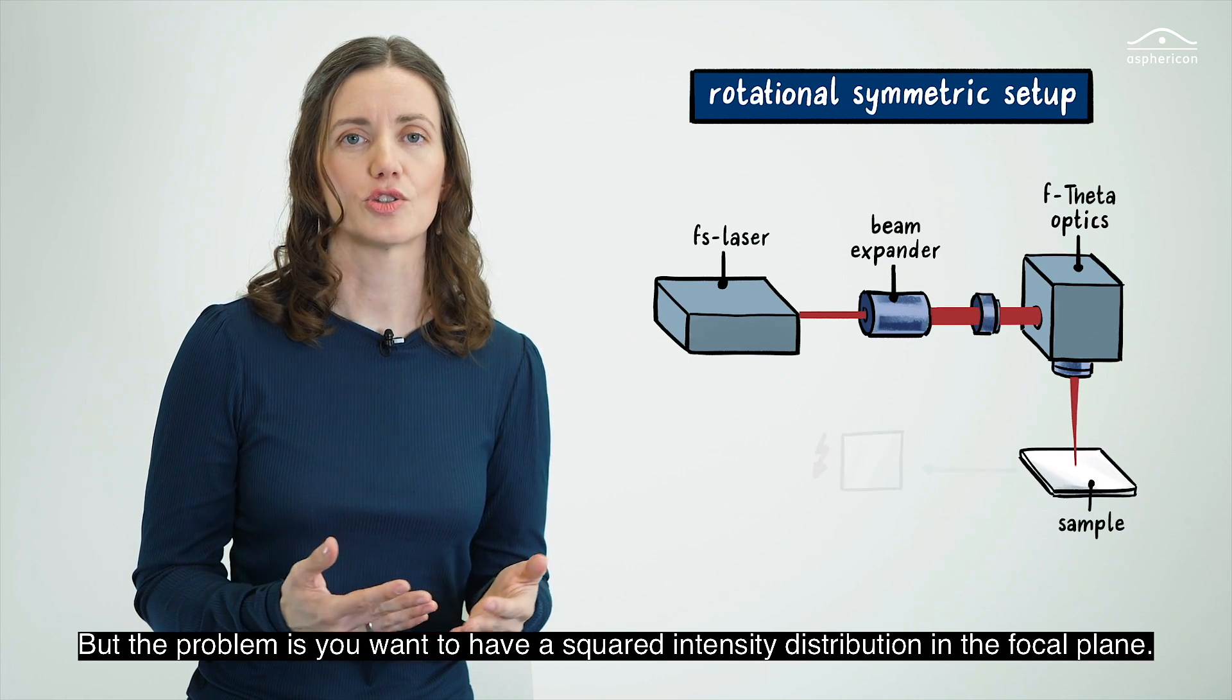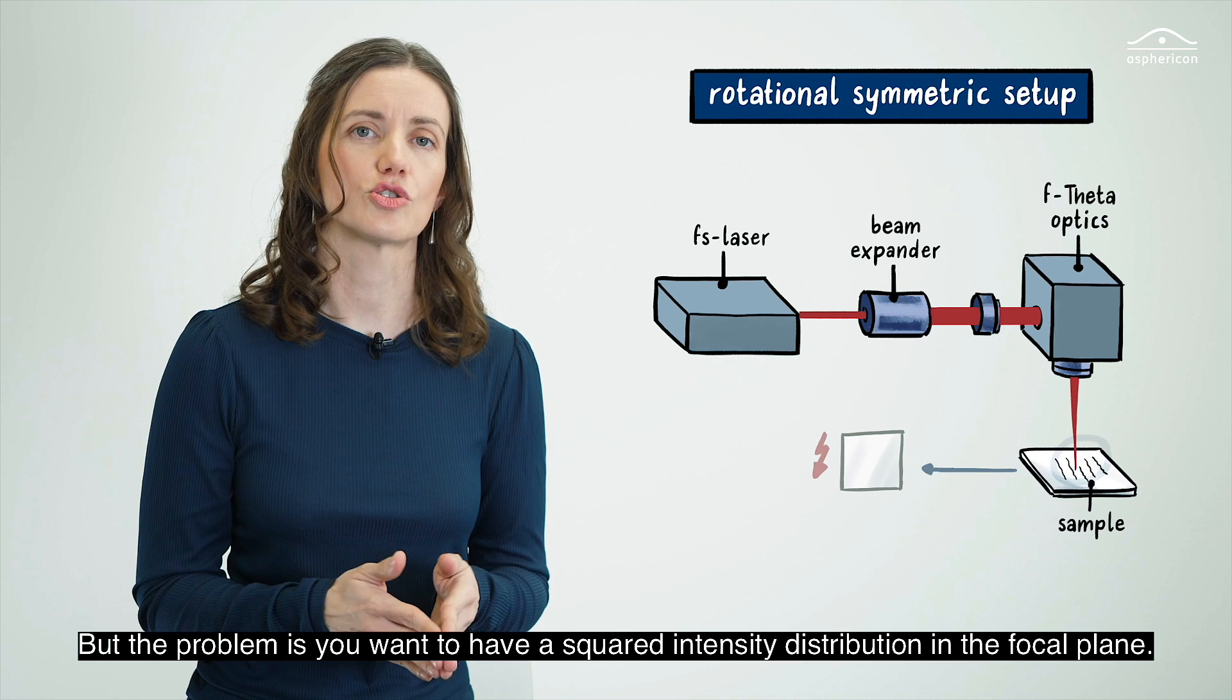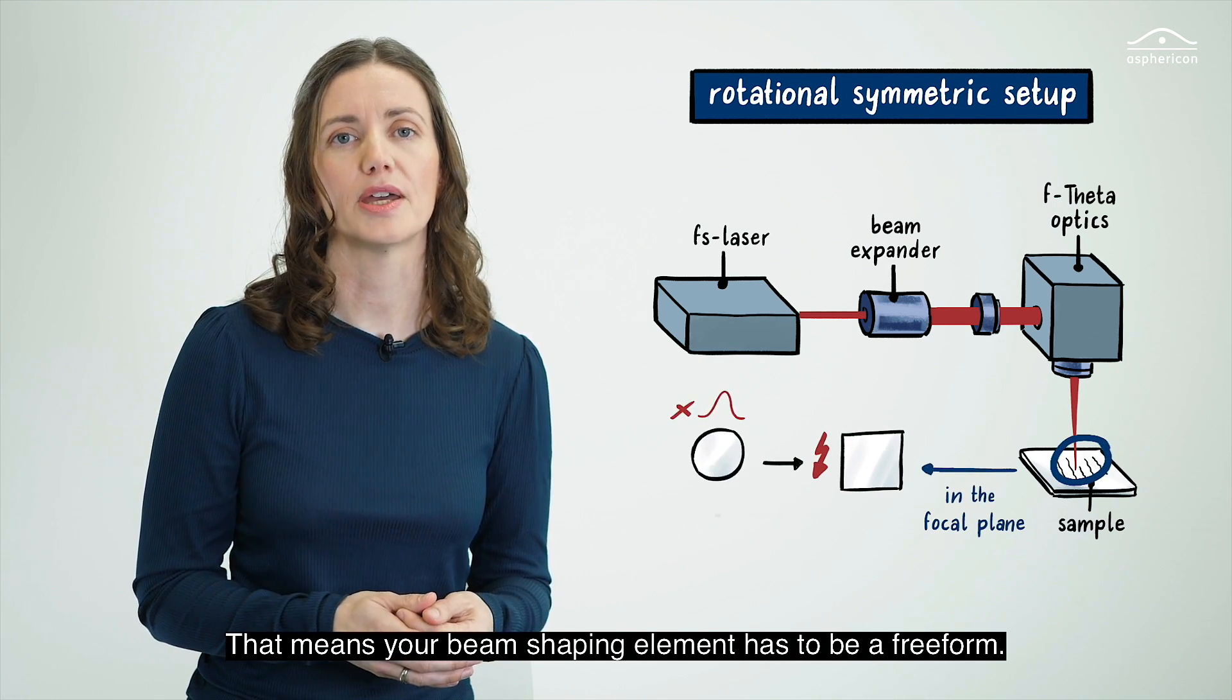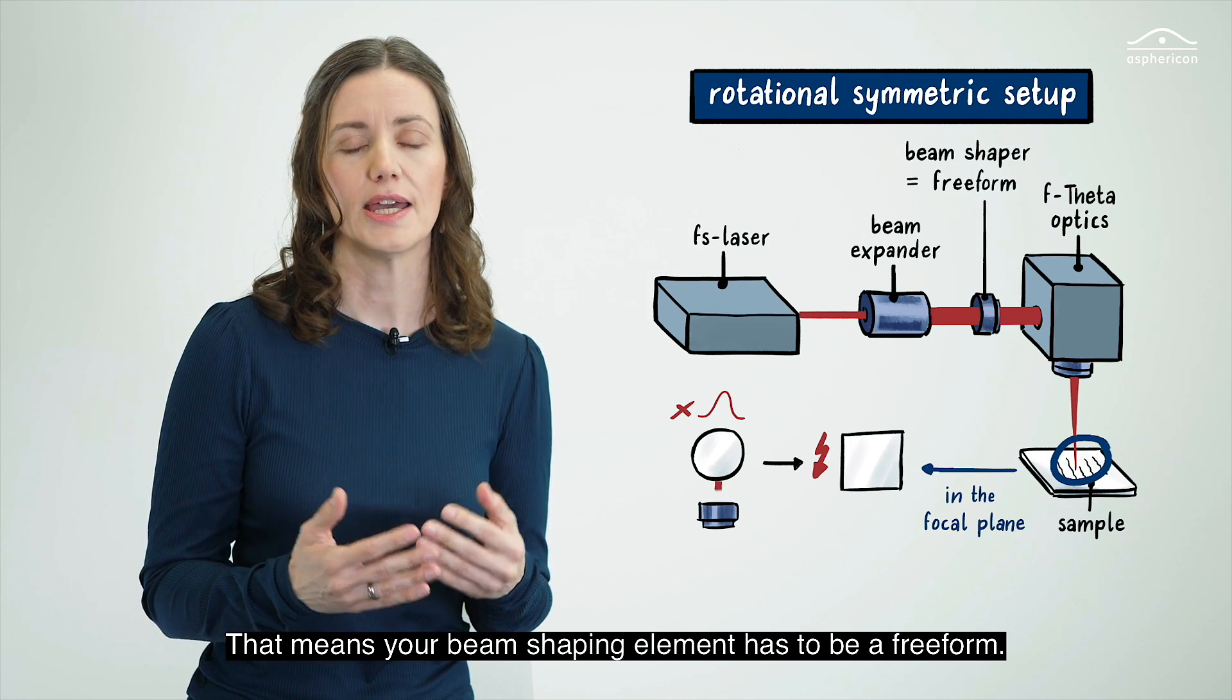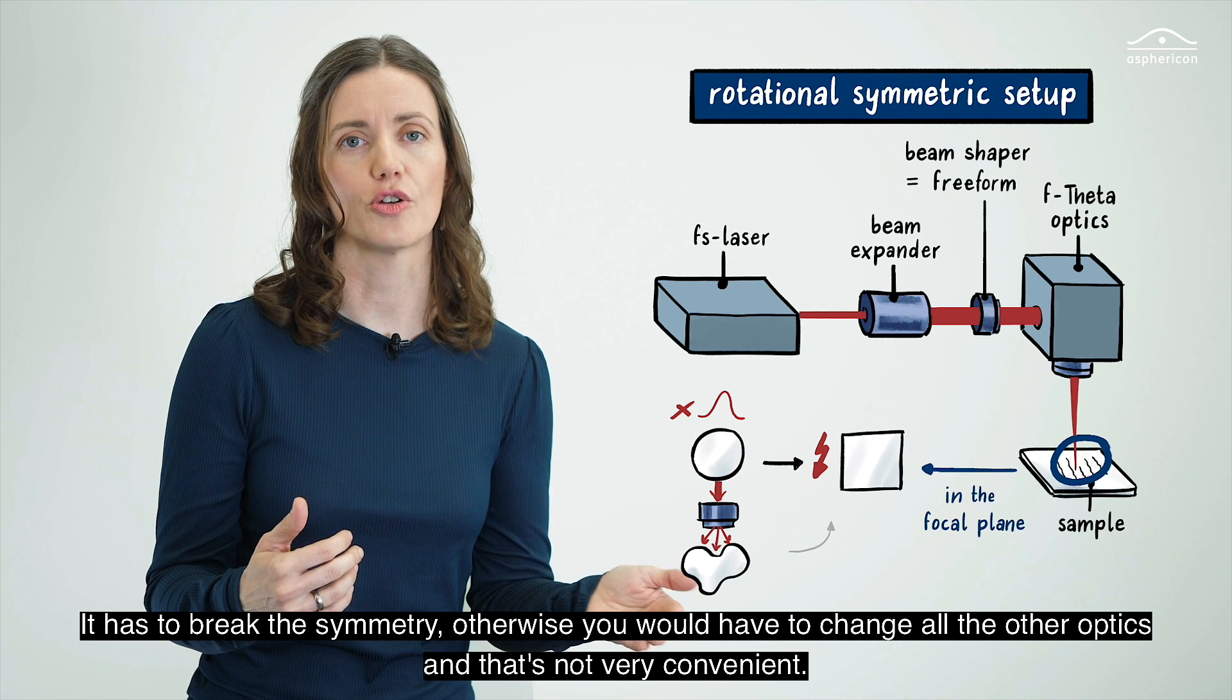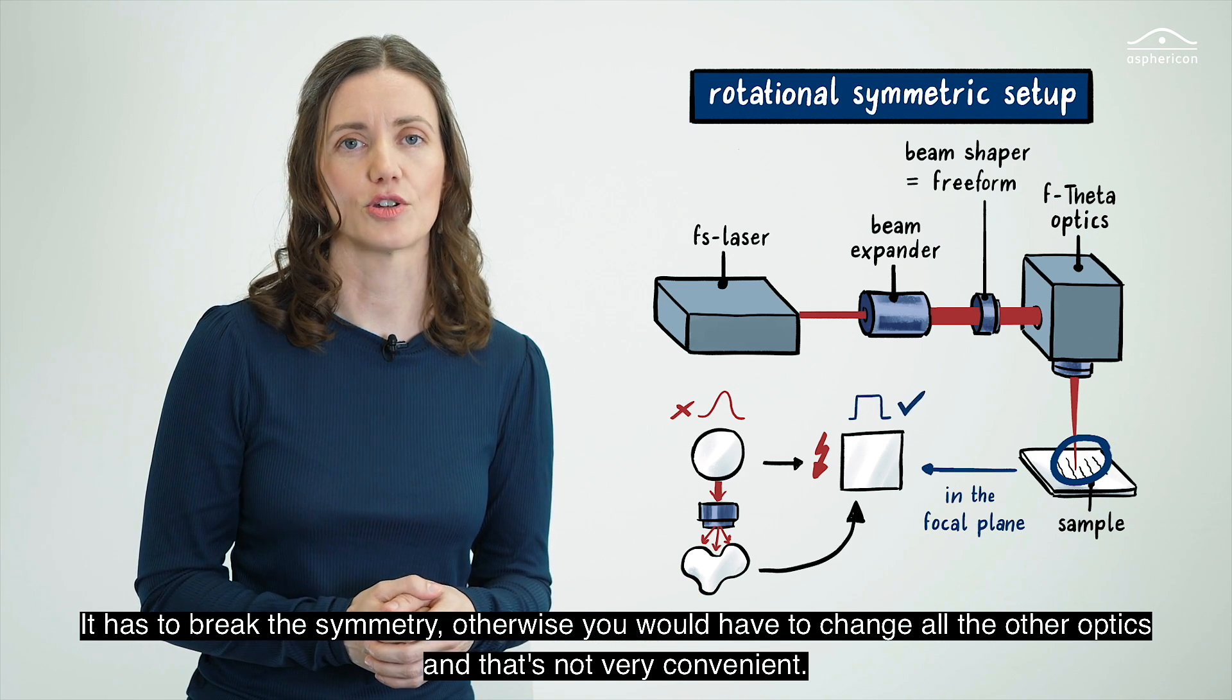But the problem is you want to have a squared intensity distribution in the focal plane and that means your beam shaping element has to be a freeform. It has to break the symmetry, otherwise you would have to change all the other optics and that's not very convenient.